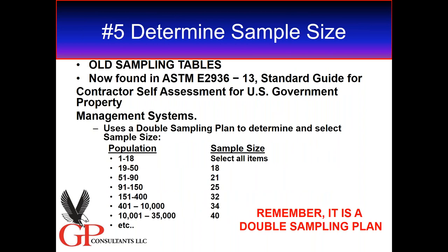Determine your sample size. If you use any of those tables found in 2936, it tells you: if you have a population of X, you use a sample size of Y. For example, if my population ranges between 401 and 10,000 items, I'm going to pull 34 random samples. It is a double sampling plan, so really you're going to select two samples of 34 just in case you have some errors or deficiencies within your first sample. The table tells you to select that second sample, so it's always better to do it at the same time so you don't have the same numbers cropping up again.